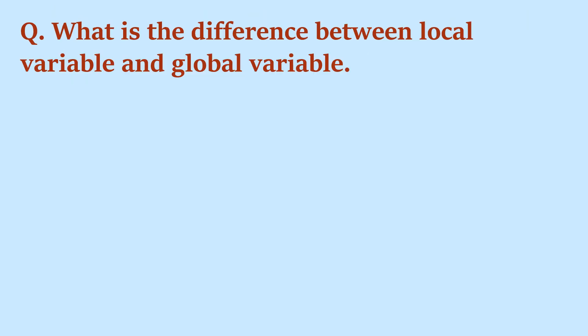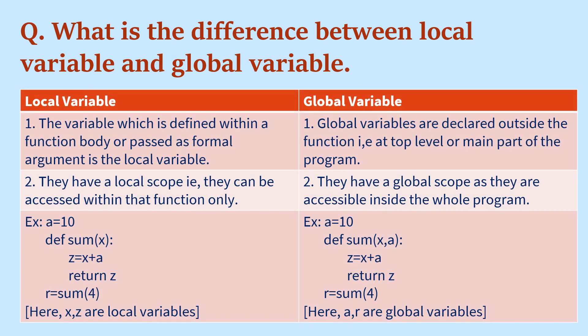What is the difference between a local variable and a global variable? Local variables are variables created or defined within the function body, or passed as formal arguments to the function. Global variables are variables declared outside of a function, at the top level or main body of the program.